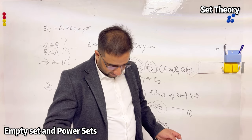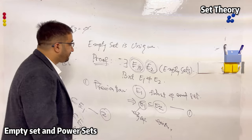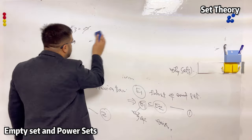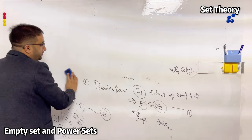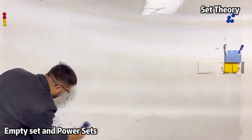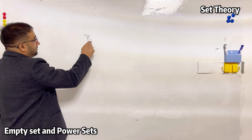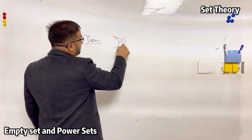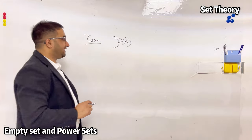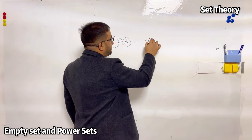Now for the final theorem in set theory, after which we will discuss some properties of Boolean algebra. The theorem states that the power set of any set A — denoted with a calligraphic P, not a simple P — always has 2 raised to the power n elements, where n is the number of elements in A.